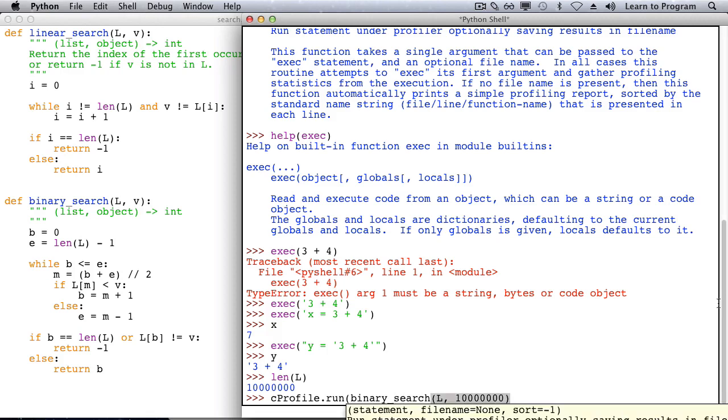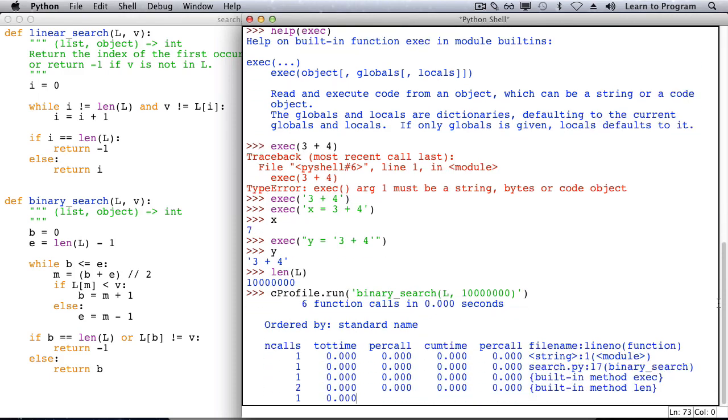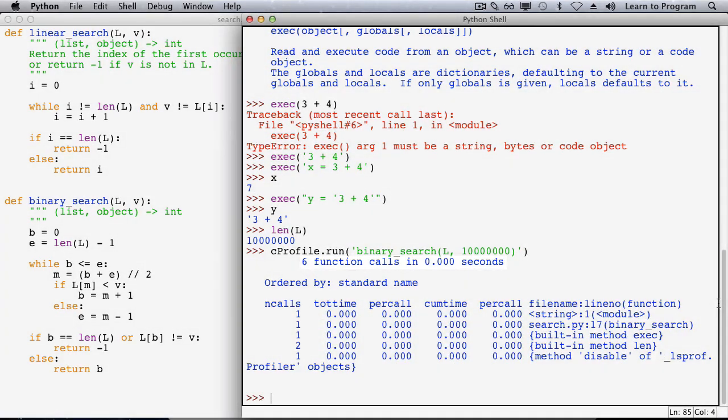Let's call function run in module C profile with a call on binary search, looking in that list for a value that isn't there. We see a table. There were six function calls. It took very little time. There was one call that took the total time of no seconds, and it was on the string that we passed in. There was one call on binary search. There was one call on exec, one call on len, and one call on a method disable of the profiler. That last one is completely irrelevant to our analysis.